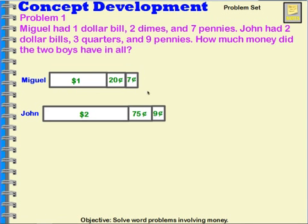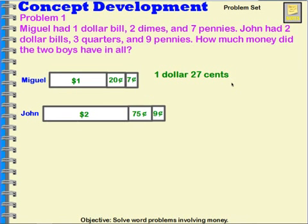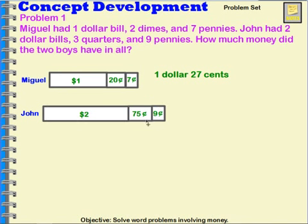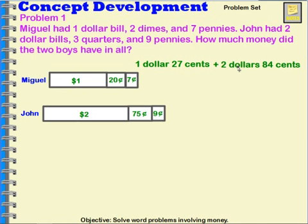So now I just need to know what the two boys had in all. First, take a look at Miguel — he has one dollar and twenty-seven cents. Now I need to add in John's. John has two dollars. When I add 75 cents and nine cents together, I can take one penny and put it with the nine, giving me ten and seventy-four cents. Ten cents plus seventy-four cents is eighty-four cents. So I need to add in two dollars and eighty-four cents.